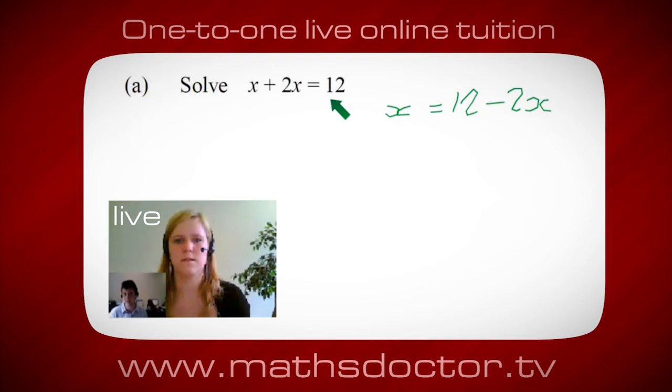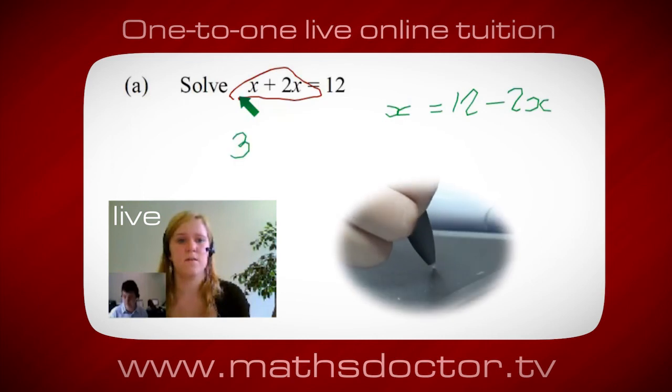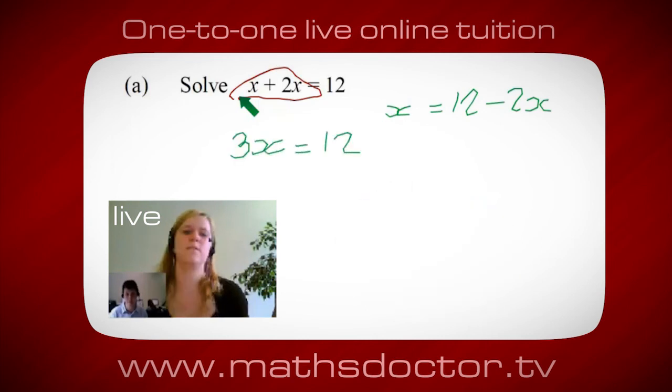Okay, so a lot of the time we want to get x by itself but what we want to do first is get all of these x's together. So can you see anything we can do with this? Get all these together in one place. Oh, okay, it's 3x isn't it? Yeah, absolutely. So 3x equals 12. Oh, and so x equals 4. Brilliant, spot on, well done.